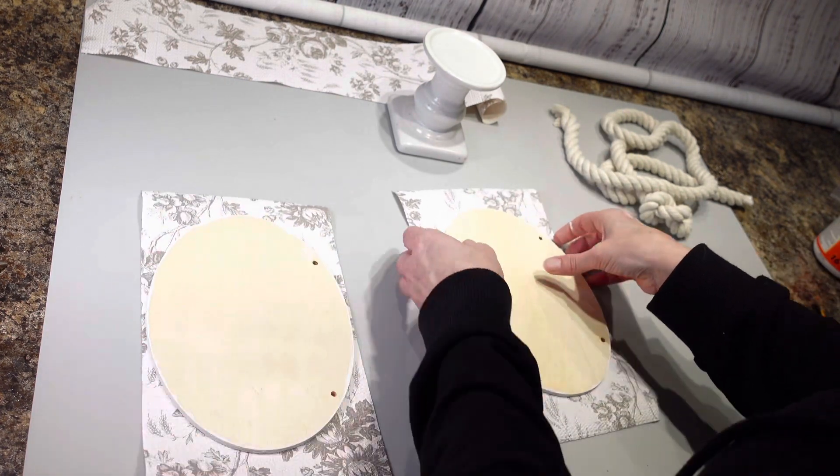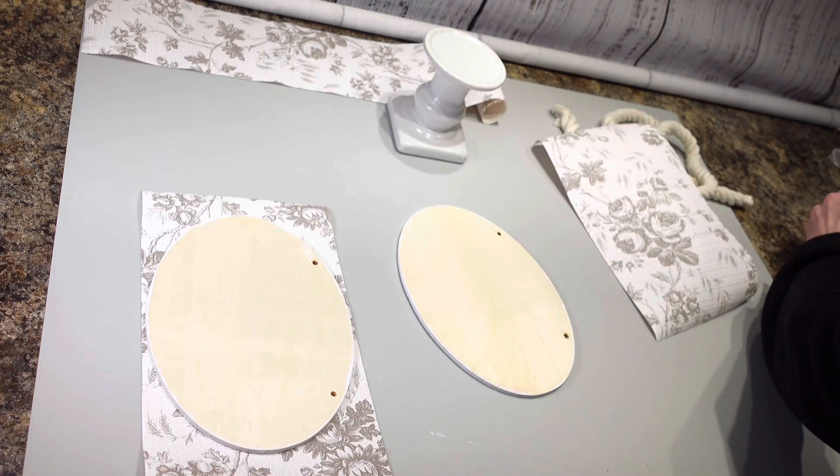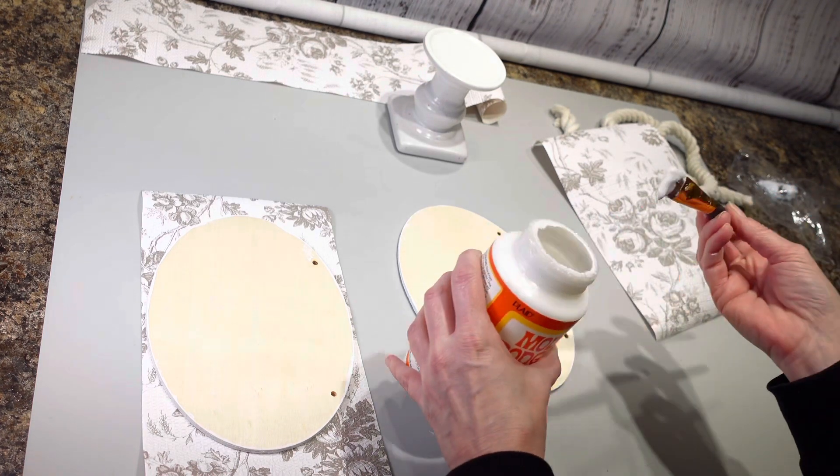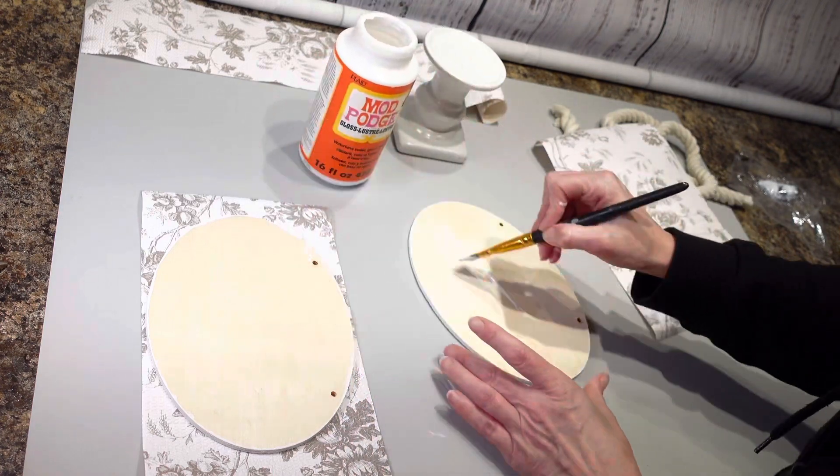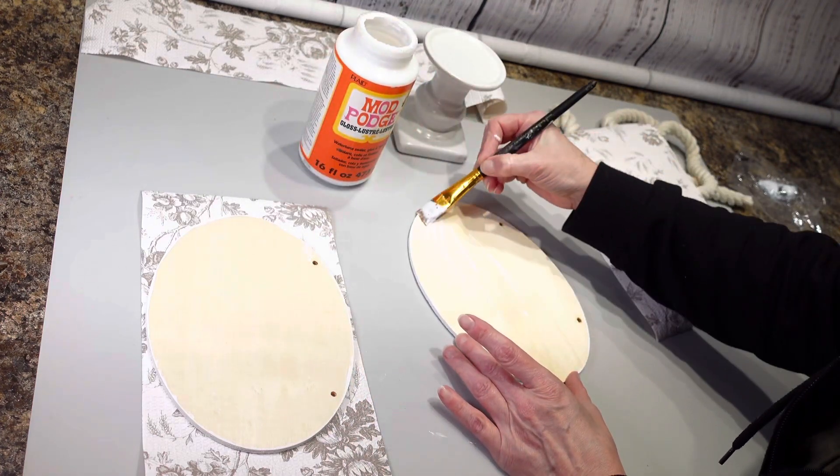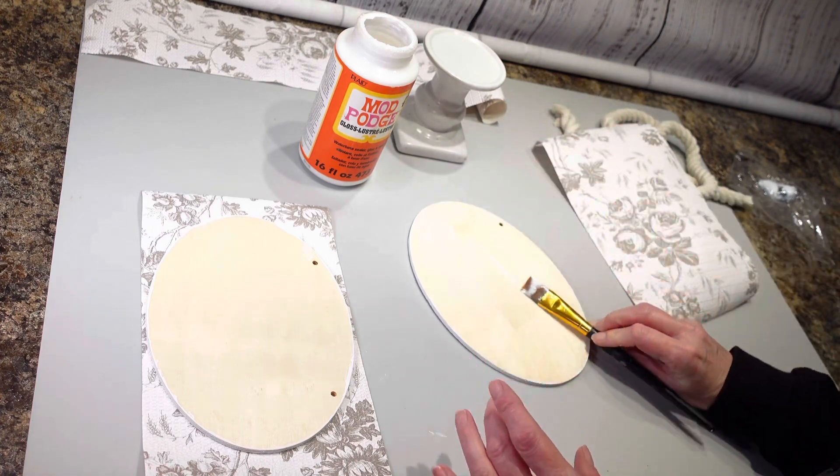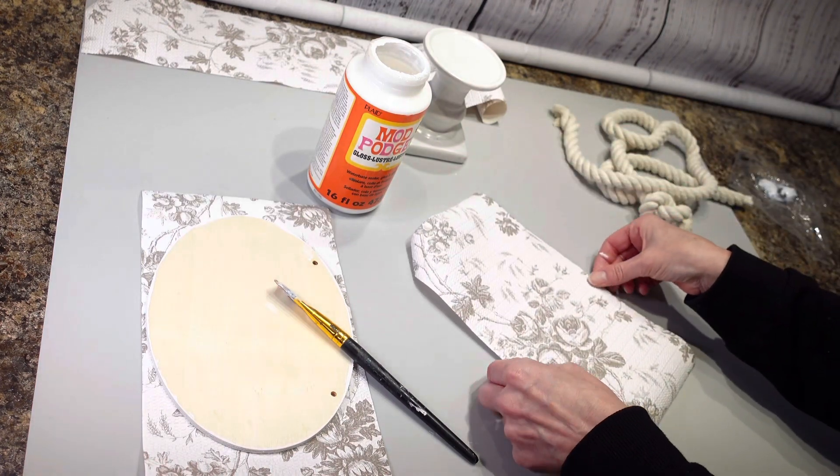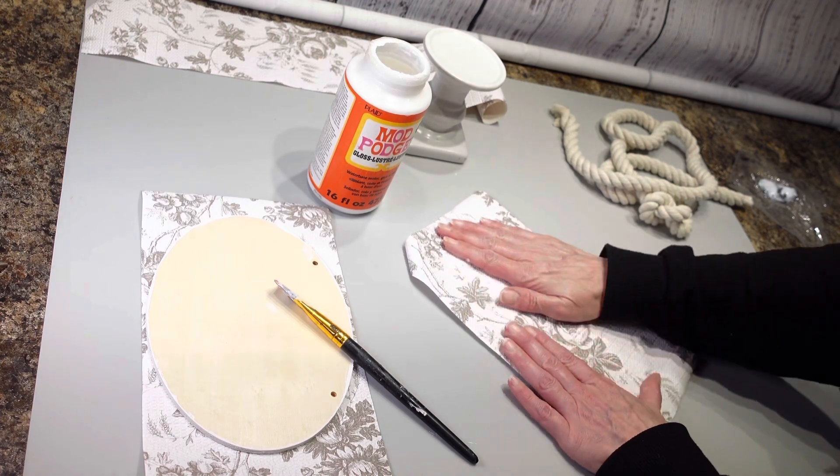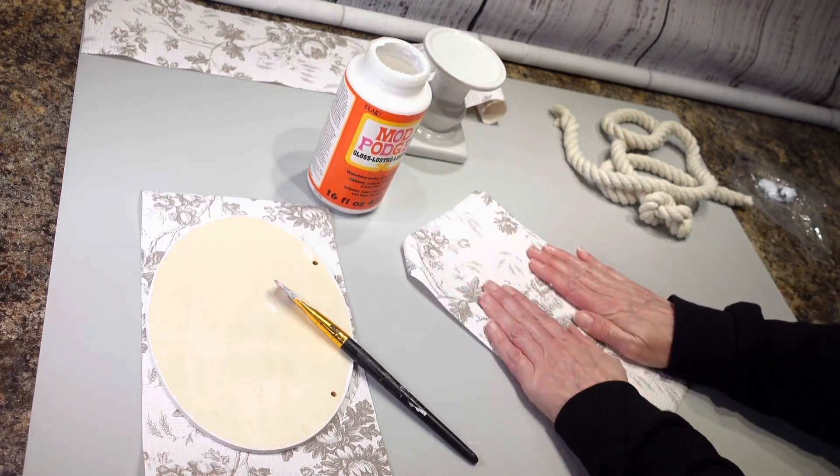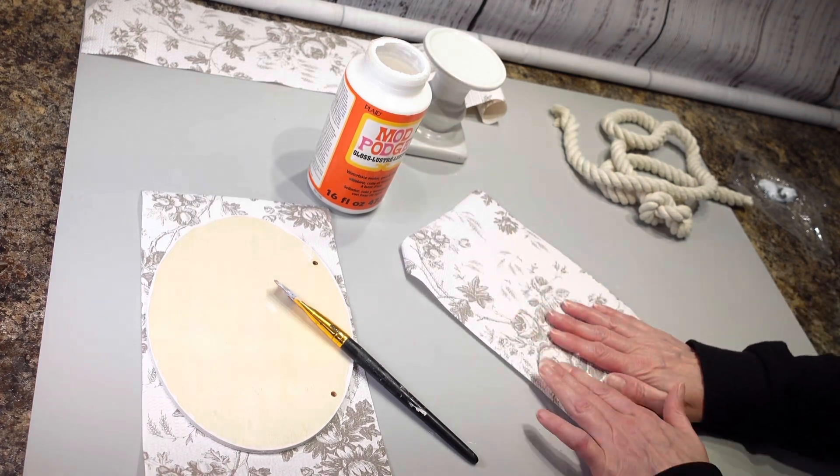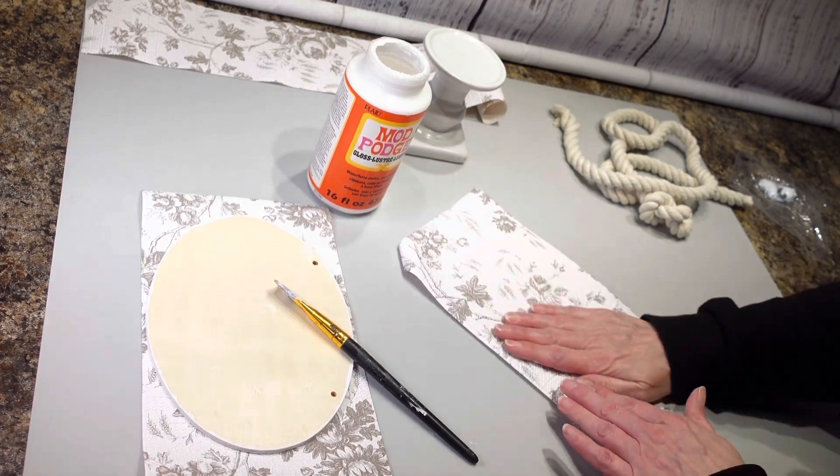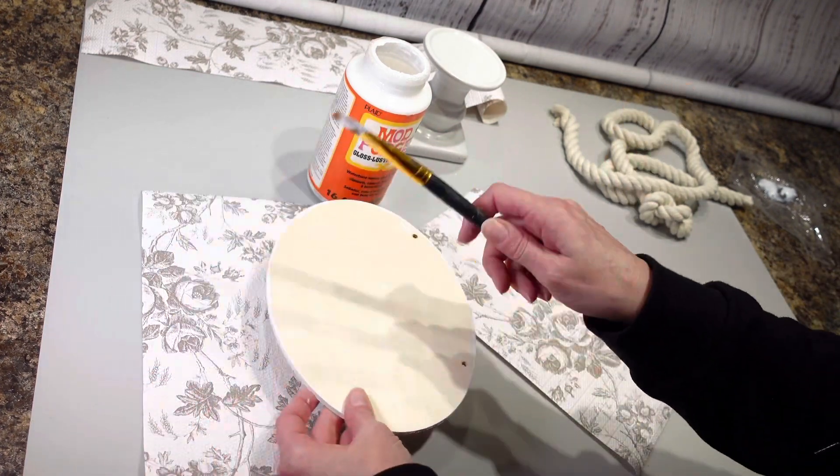And then I'm going to put some Mod Podge on here. I'm going to put a nice coat on my wood piece here, making sure that I get all the way to the edges. I have my Mod Podge on there, and then I'm going to take my shelf liner, making sure that I cover up the sides, and press that down onto here. I'm just going to keep rubbing it and making sure that I get all the edges down, and then I'm going to let it sit and dry. I'm going to do this one with the other piece.